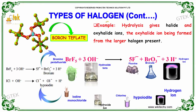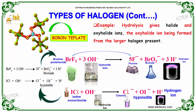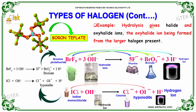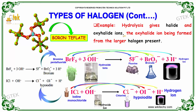Looking further at the types of interhalogens: a typical example is hydrolysis, which gives halide and oxyhalide ions. The oxyhalide ion is formed from the larger halogen present.